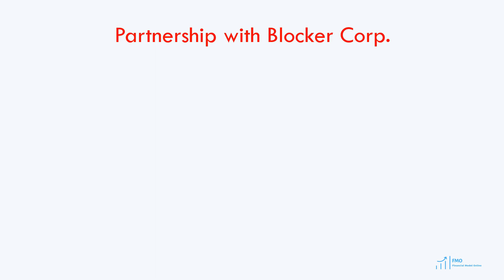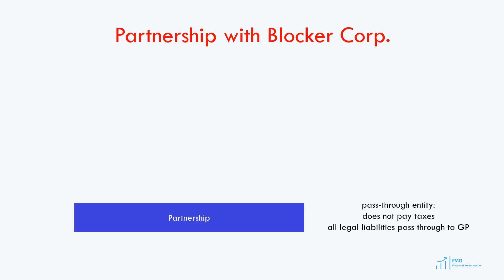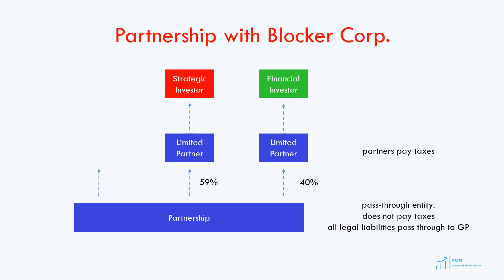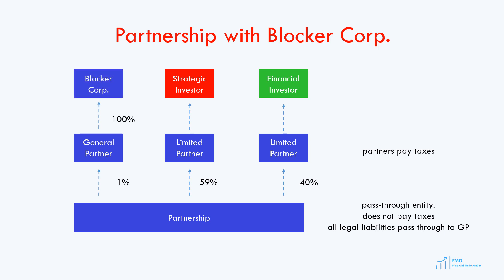To deal with unlimited liability, partnerships are usually structured with blocker corporations. Suppose that we have a partnership with a limited partner owning 40% — let's call him a financial investor — another limited partner owning 59%, called a strategic investor, and a general partner owning 1%. The general partner is wholly owned by the blocker corporation, which is a C corporation, and this blocker corporation is 100% owned by the strategic investor. Since the strategic investor is an investor in the C corporation, the liabilities of the C corporation do not pass through to its investors. However, the C corporation does pay income tax. This way, the strategic investor manages to rid of the unlimited liability from the partnership, which is now taken by the blocker corporation.